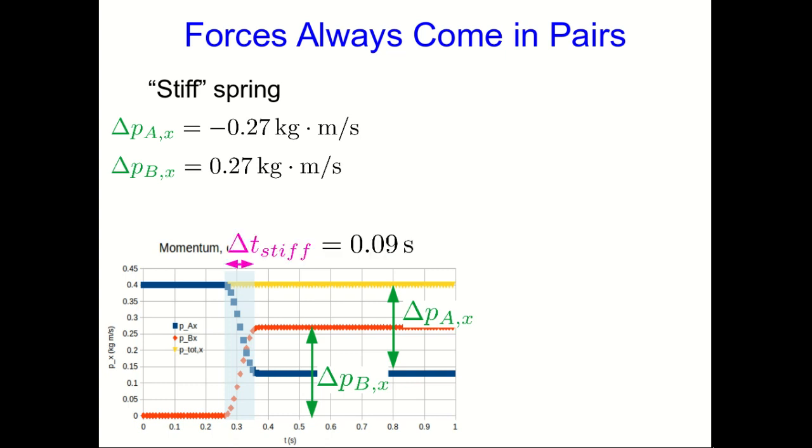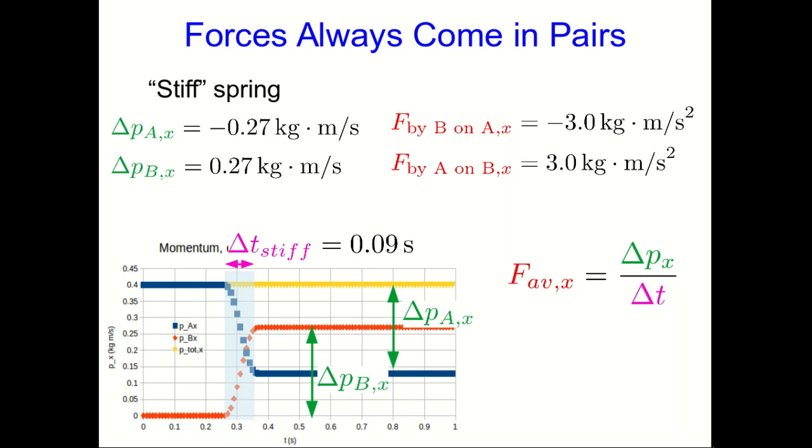So the difference now is that the time of the collision is shorter. And so again, using our definition of force as rate of change of momentum, we get the force by B on A as now negative three kilogram meters per second squared, and the force by A on B as three kilogram meters per second squared. So they're about three times what they were with the soft spring.